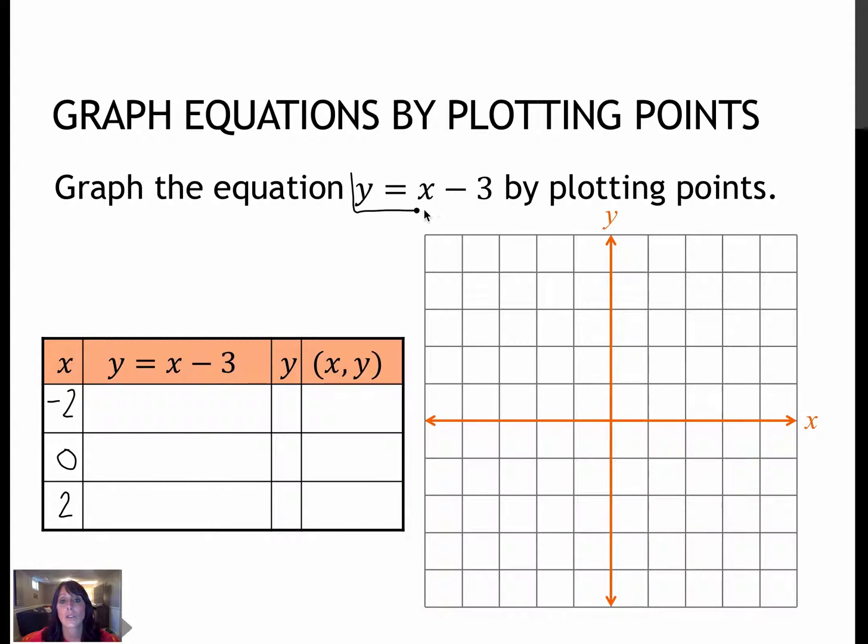Again, looking at this graph, I know that it will be linear, meaning it's going to make a straight line, because it's y to the first power and x to the first power. So when you start having squares, or you have a variable that is a denominator, that's when you know the graph will look different.